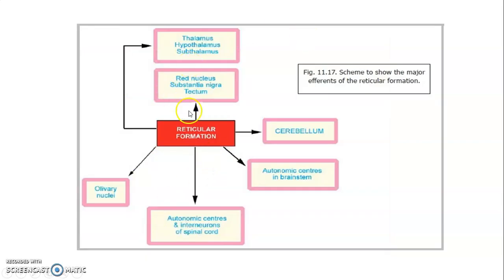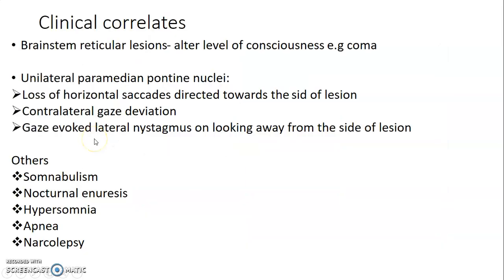From the reticular formation there are connections to the olivary nucleus in the medulla, to autonomic centers of the medulla and brainstem, to the cerebellum, to the red nucleus, substantia nigra, and tectum of the midbrain, and to the thalamus, hypothalamus, and subthalamus of the diencephalon.